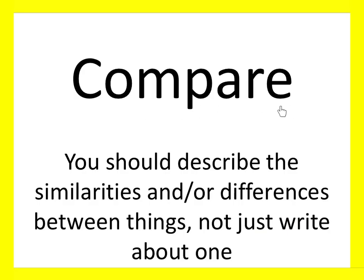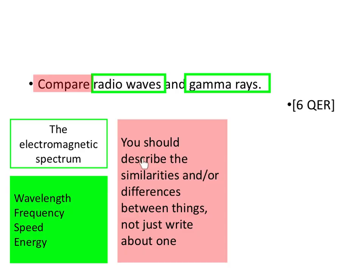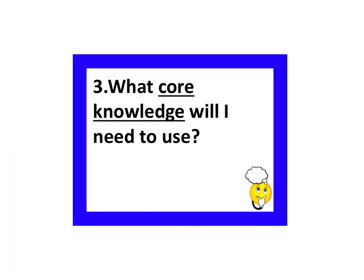The command word is 'compare.' That means we describe the similarities and/or differences between things, and we need to write about both — not just one. I can't just talk about radio waves; I have to say radio waves are something compared to gamma rays, whether they're the same or different.